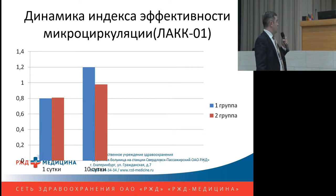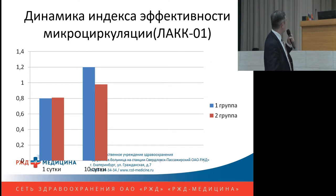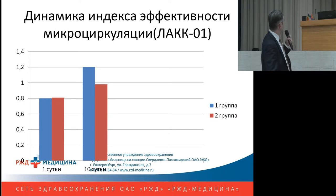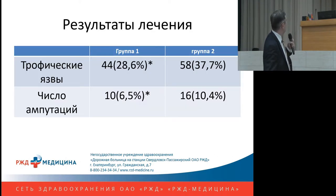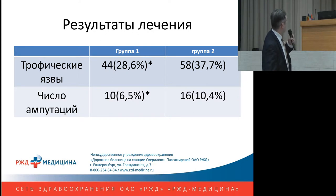We also assessed microcirculation using the Laser Doppler device. One of the key indicators was the microcirculation efficacy index, where we obtained significant changes. The microcirculation index on admission was at an initial level of 0.8. Upon discharge, in the first group it was 1.2, while in the second group, where only traditional treatment was given, it was significantly lower.